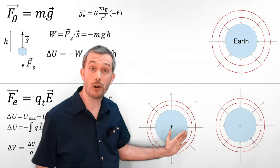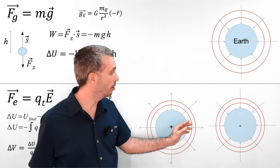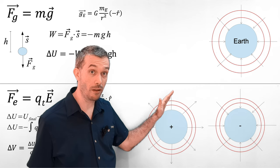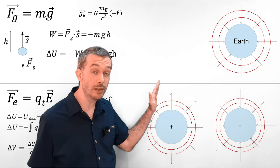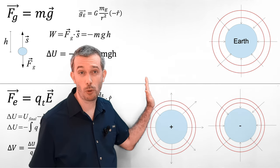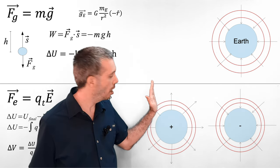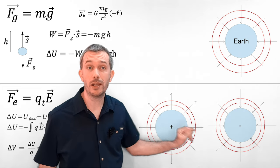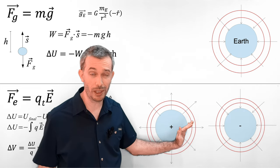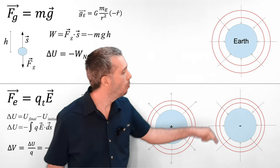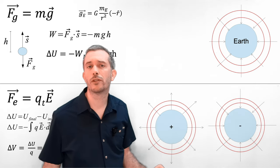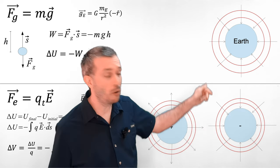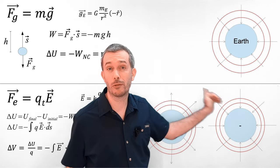So with a positive charge, the potential gets lower and lower the further away we get from it. This is the direction the field is pointing — away from positive charges — and it gets higher and higher the closer we get to it. When we get closer, we travel against the field lines. With the negative charge, it's the same thing, just this time the electric field points towards the negative charge.